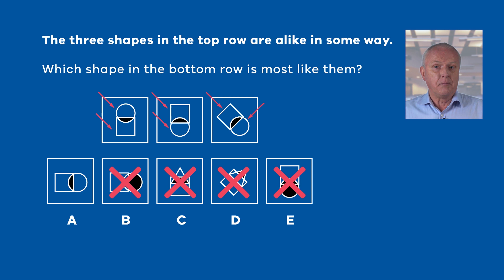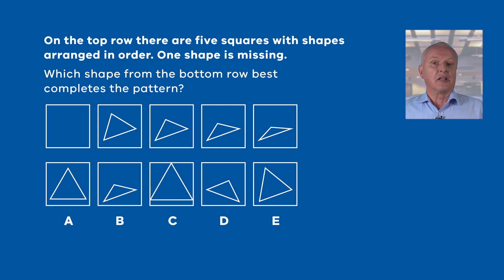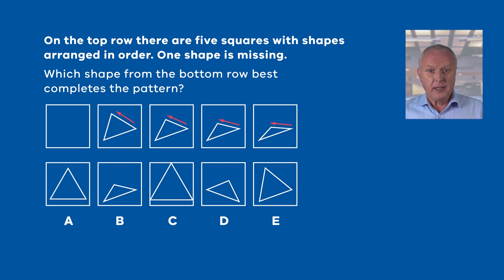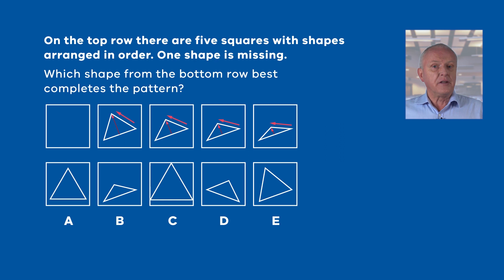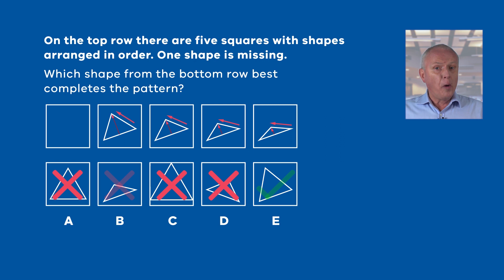In the next question, you need to select the option that fits into the blank box to complete the pattern. First, let's note details about the shapes and the pattern. Each of the boxes contains a triangle, and each triangle is tilted slightly to the left. The triangles are decreasing in height as we look from left to right. Options A and C are not tilted, so they don't fit the pattern and can be eliminated. Option D is tilting the opposite way, so we can eliminate this as well. The triangles are decreasing in height, so the first diagram will have the tallest triangle. Option E best completes the pattern because it is taller than all the triangles in the top row.